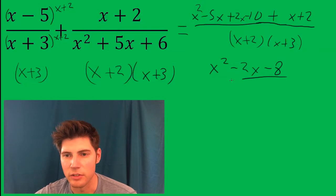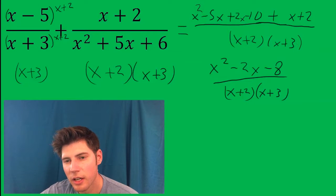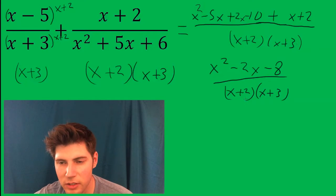And all that is over (x + 2)(x + 3). You want to factor this and see if they cancel. This does factor. So it's (x - 4)(x + 2).